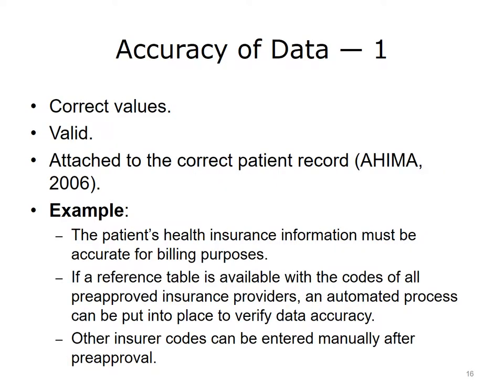Accuracy is a term used to refer to the extent that the data properly represent the real-life objects they are intended to represent. Accuracy implies that the value is valid and correct, and the person who the value is related to is properly assigned. Accuracy can result from deficiencies in other attributes that we will be discussing later on. A lack of precision or completeness can also influence the accuracy of the data and the answers to the questions you intend to find through the use of that data. Data quality impacts not only clinical care — payment for appropriate care rendered is critical to the survival of any provider in all care settings.